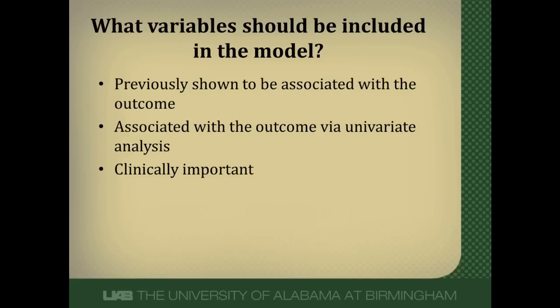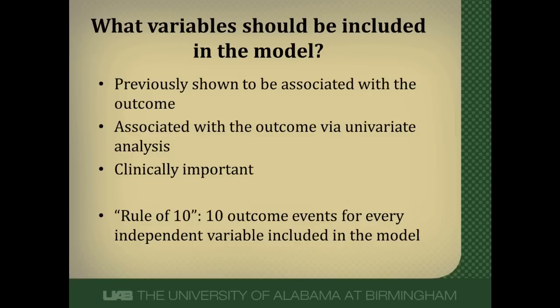You can put too many or too few things into a model. The rule of 10 states that you should have 10 outcome events for every independent variable included in the model. This ensures sufficient power to assess the effect of all predictor variables on the outcome. So if there are 10 variables in the model, there should be at least 100 outcome events. Remember this rule of 10.